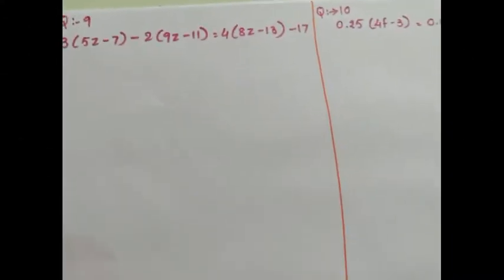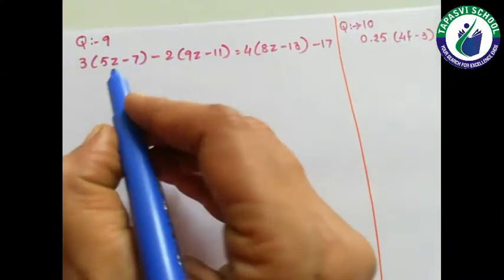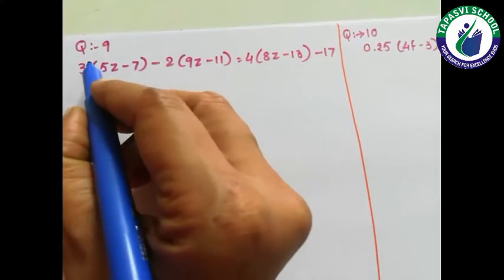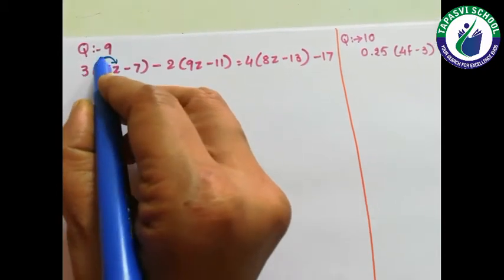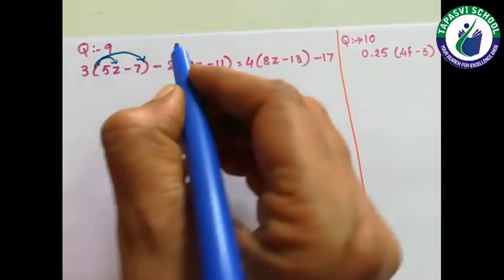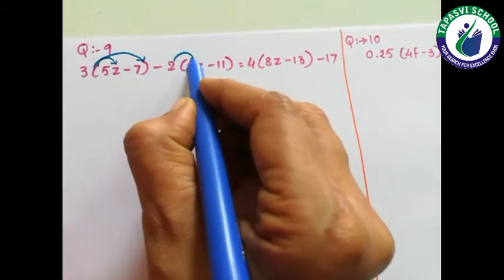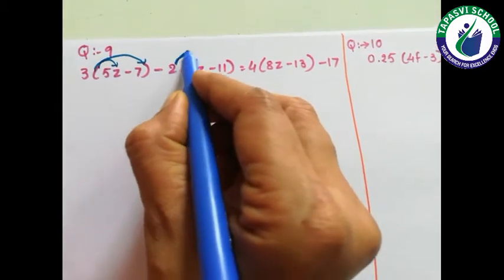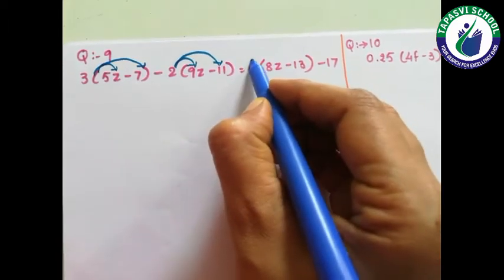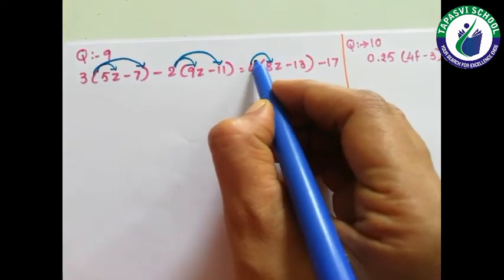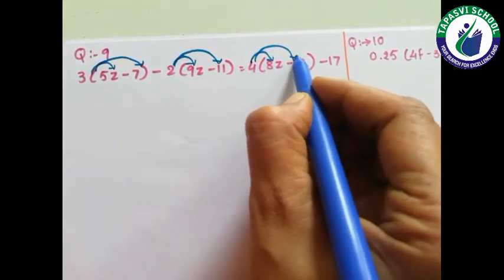Now students, in our question number 9, again we have monomial to binomial multiplication on both sides.